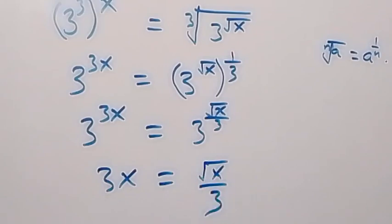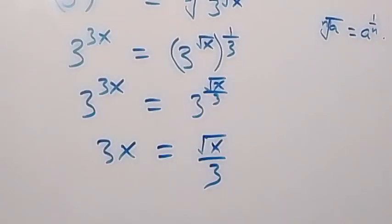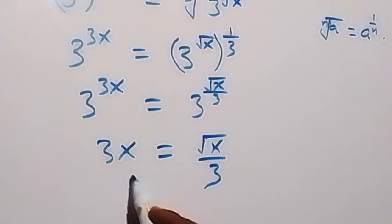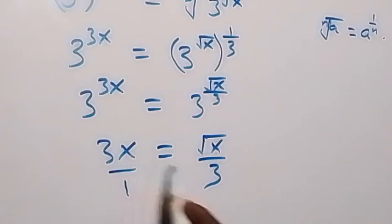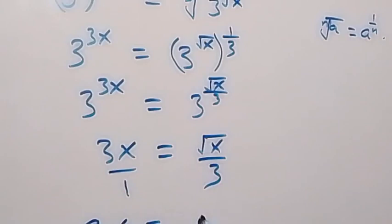Then next, from here we cross multiply. This is 3x over 1, and when we cross multiply, 3x times 3 gives 9x, now equals to root x times 1, that's root x.